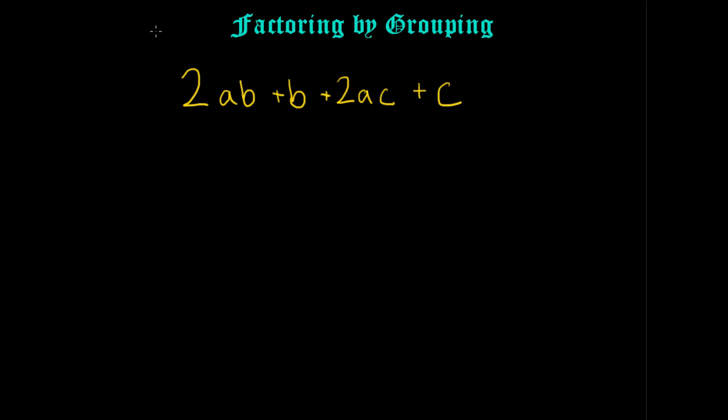Welcome to part two of the factoring videos. Today we'll be talking about factoring by grouping. The last video was common factors — you just found things that were similar and factored them out of the expression. Sometimes it's not going to be so obvious what's common in the expression. Sometimes you have to move things around, regroup them, even make decisions as to what you want to factor out.